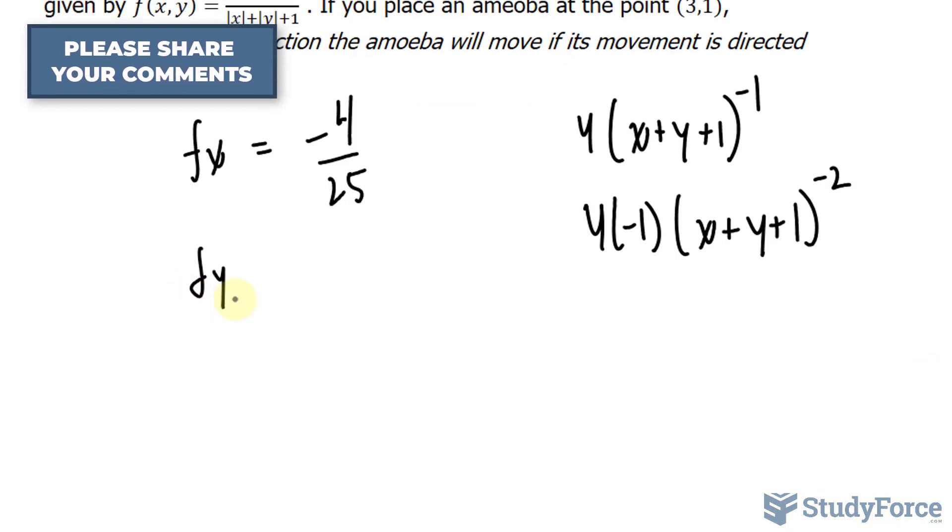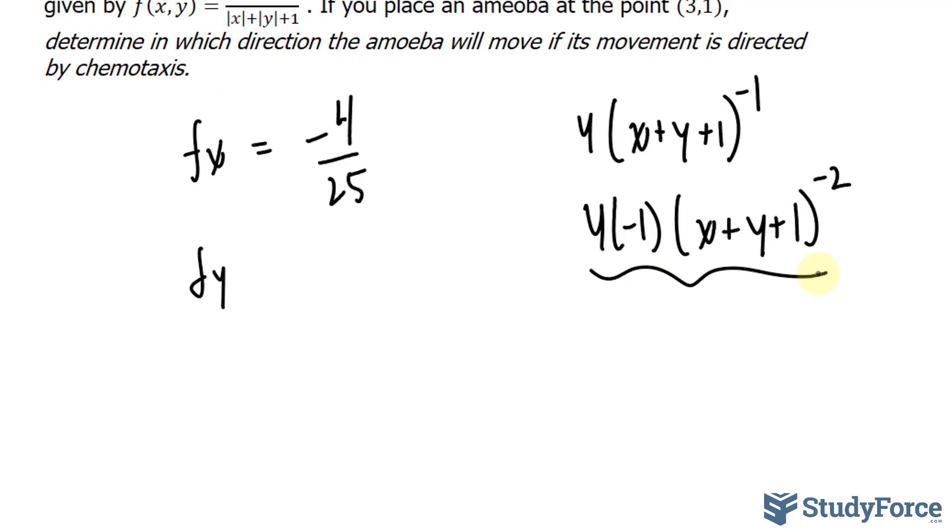And the partial derivative with respect to y is identical to this. It's the same thing. So evaluating it at (3,1) again should give you negative 4 over 25.